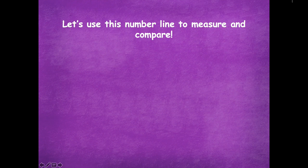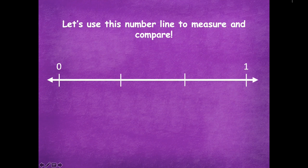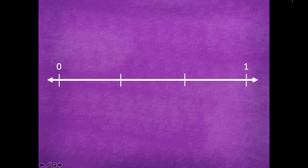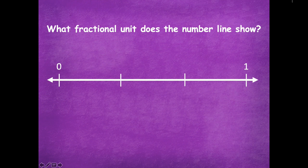Let's jump into today's lesson. We'll use this number line to measure and compare. Remember, comparing is just greater than or less than. So what fractional unit does the number line show? A fractional unit is how many parts — how many parts are in this number line? It's split into thirds — there are three equal parts.